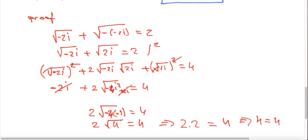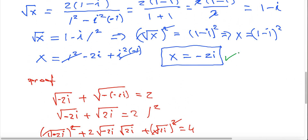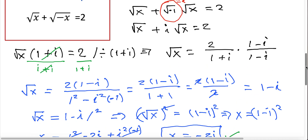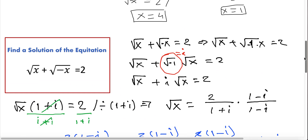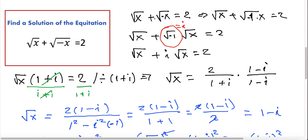It holds, so x = −2i is indeed the correct solution for this equation. x = −2i is one of the right solutions for this equation.